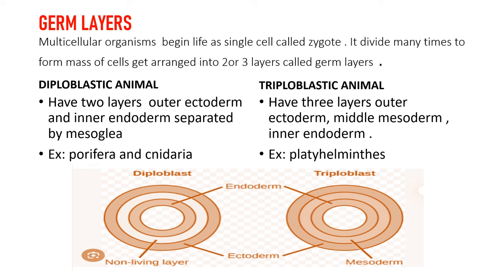Next we talk about germ layers. When there is a multicellular organism, it begins its life as a single cell zygote. This zygote divides many times and forms two or three germ layers depending on the organism, and on this basis we classify animals as diploblastic and triploblastic.